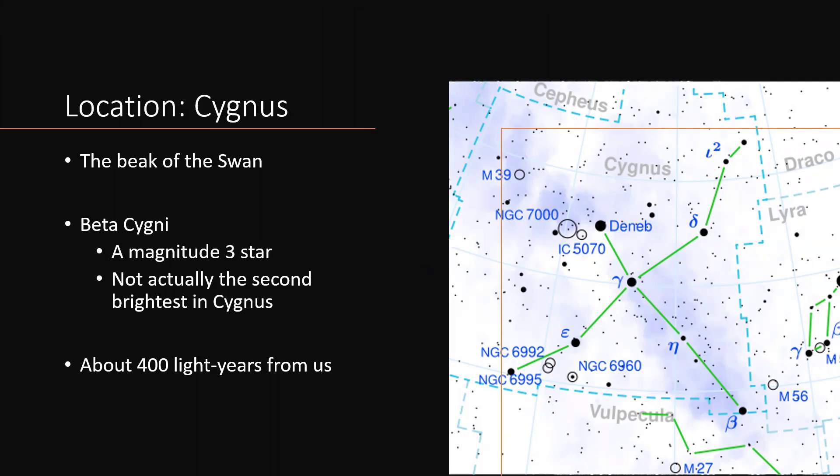The second brightest star should be designated beta, and this isn't, because the gamma and delta stars are certainly brighter than it. It's only a magnitude three star, fairly modest actually, especially by comparison to Alpha Cygni, Deneb, which is very bright indeed.